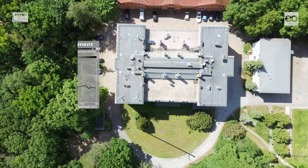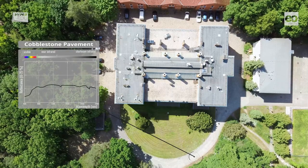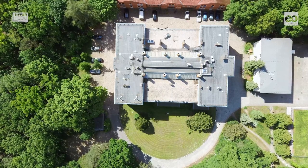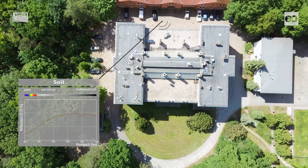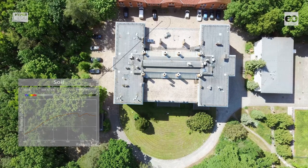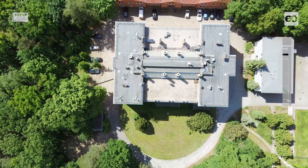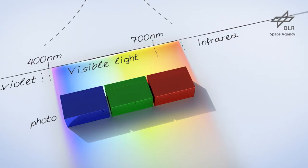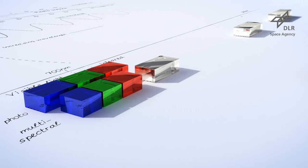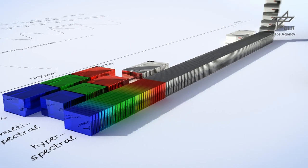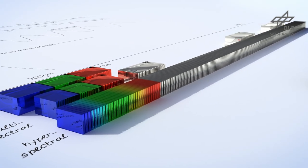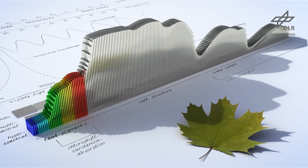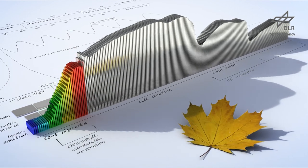All surface materials have their own characteristic reflectance spectra, by which they can be differentiated and, to some extent, quantified. Such detailed information in hundreds of contiguous bands can only be captured by hyperspectral instruments.